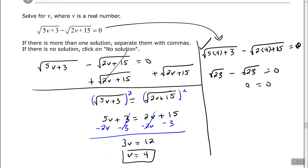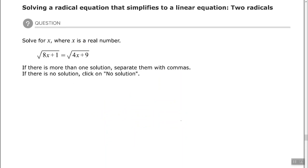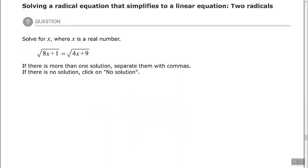Let's look at another problem. This one's the same type where we have two radicals. In this problem, the radicals are already isolated on each side of the equal sign so we don't have to move anything. We just need to clear the radicals by squaring both sides.